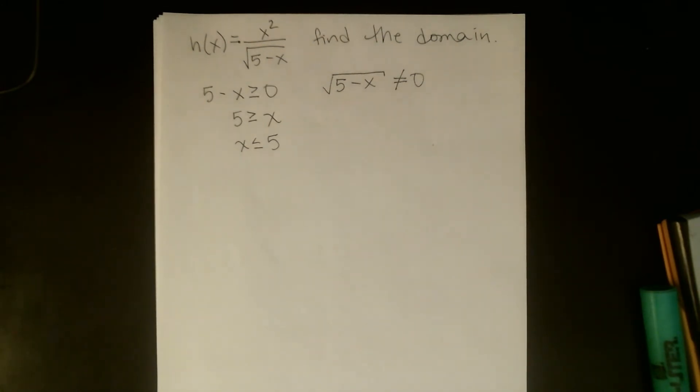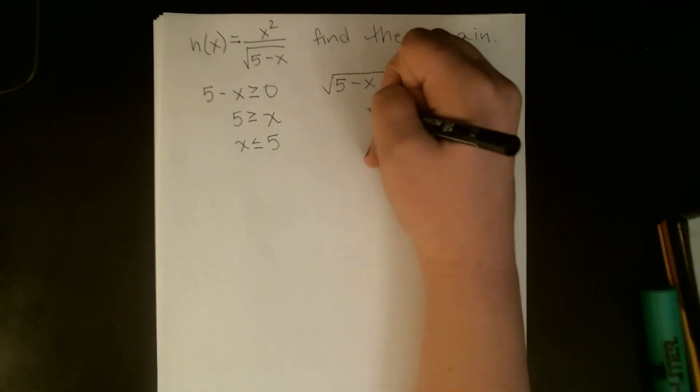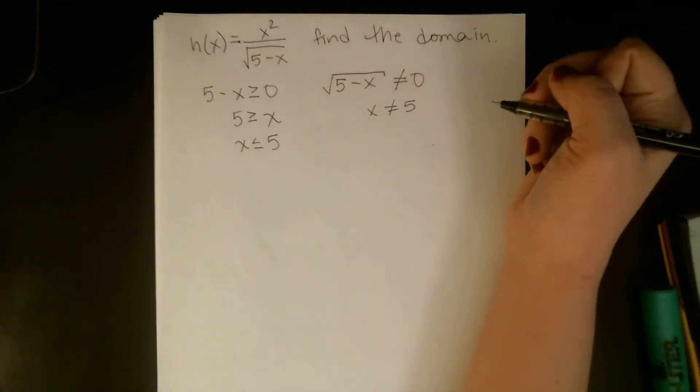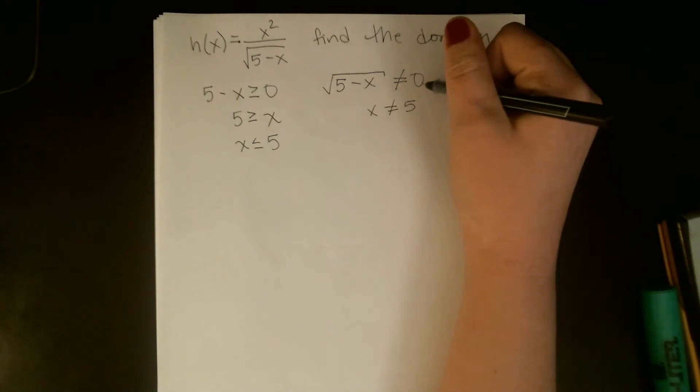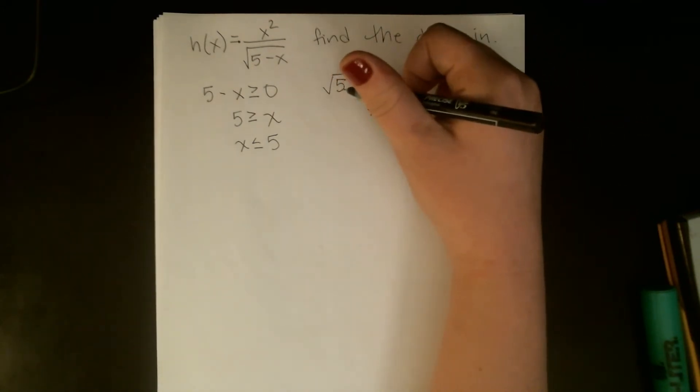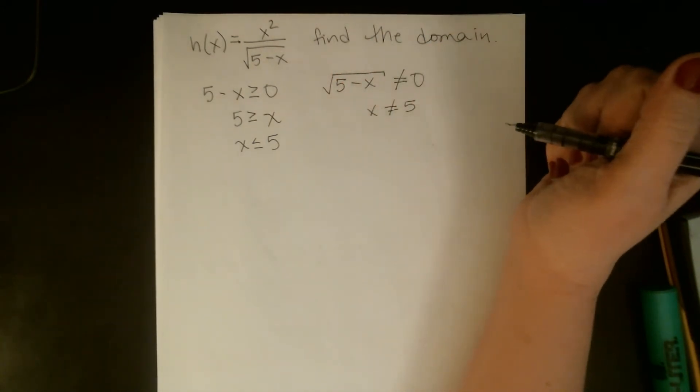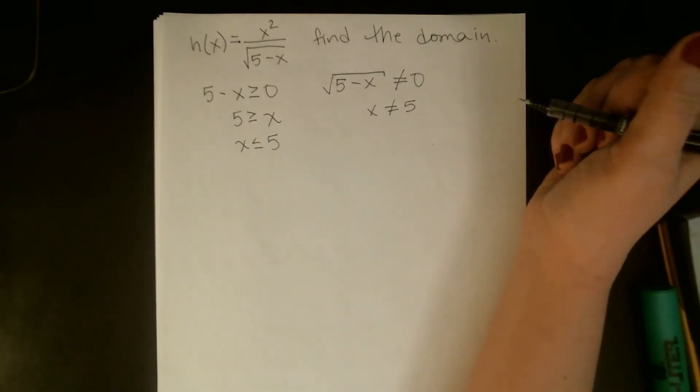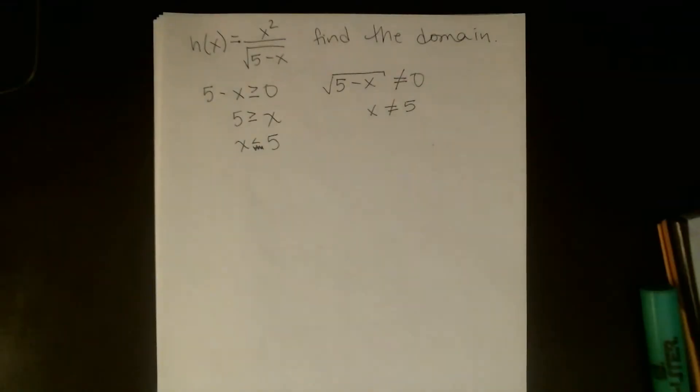Which maybe we can just see by inspection, what happens there is that x can't be 5. The only way that you're going to get the square root of something to be zero is if that something is zero. So we want to make sure 5 minus x is not zero, which means x does not equal 5. So we were almost there just looking at the square root, but we actually have to go back over here and say, all right, I changed my mind. I don't want x to equal 5.